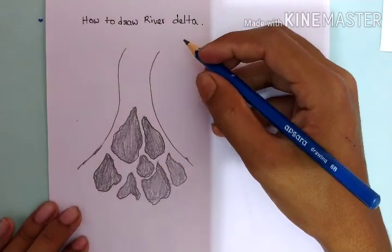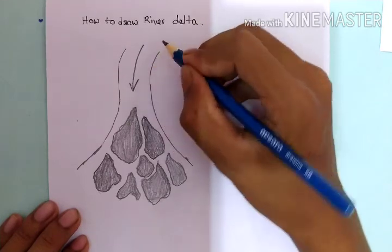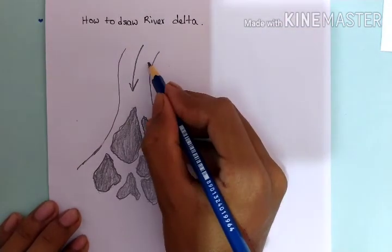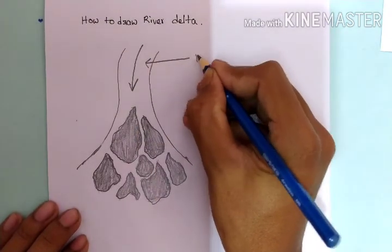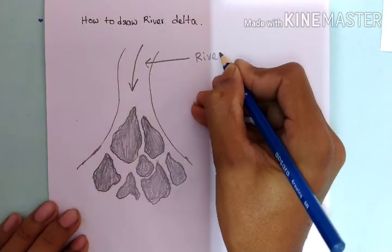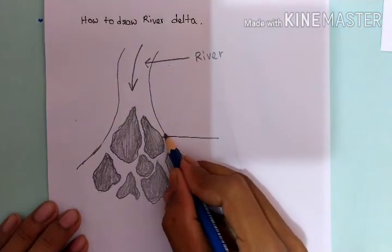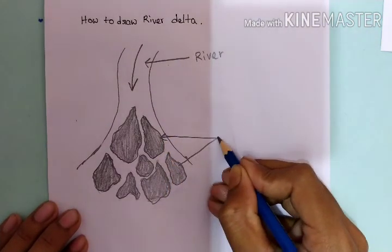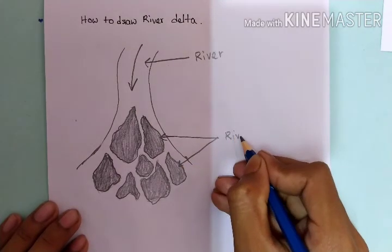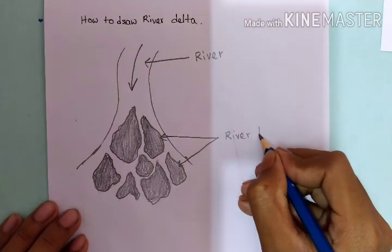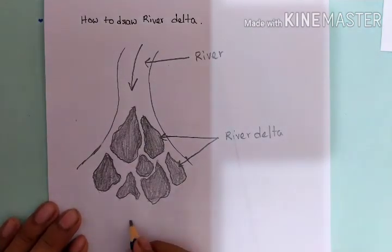Now guys we will show the flow of the river with the help of an arrow in this way. Now let's label this — so this is the river, these are the river deltas, and this is the sea.